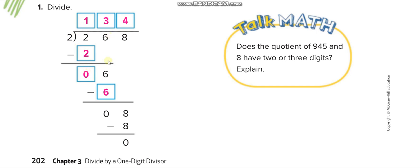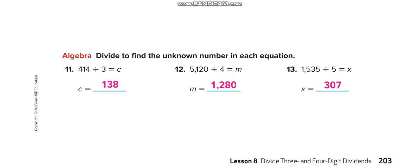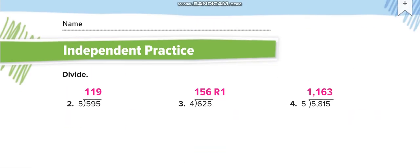2 times 4 is 8. 8 minus 8 is 0. Next page, guys. Here it is independent practice. You have to divide it all complete like we did here.